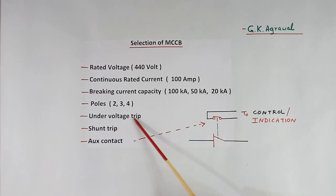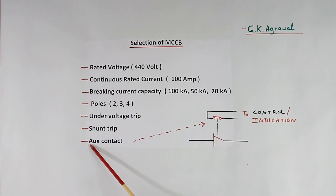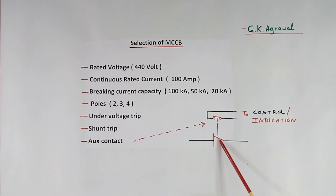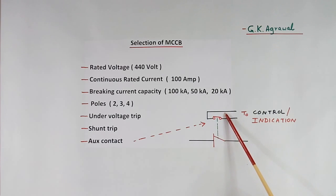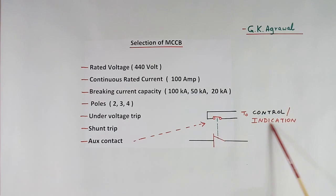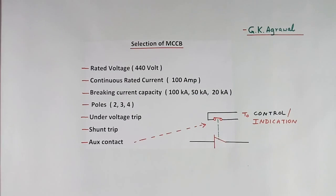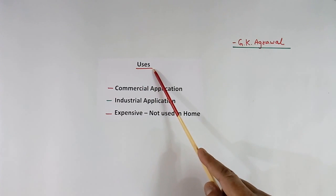Then we should know the under voltage trip requirement, whether we want a shunt trip coil or not, and also the auxiliary contact requirement. The MCCB trip contact is mechanically connected to another contact. When this trips, the auxiliary contact also becomes open. This is used for control, indication, or alarm purpose — so when this MCCB trips, some alarm will be generated.